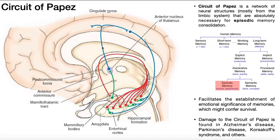You can see the structure of it over here, and we'll be discussing that in a lot more detail in a few minutes. The Circuit of Papez is a network of neural structures that contains many components of the emotional brain — the limbic system. This circuit is absolutely necessary for the consolidation of episodic memories into long-term storage.